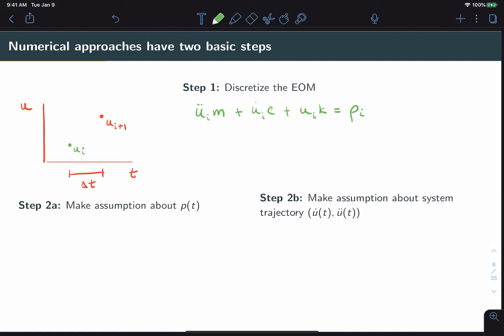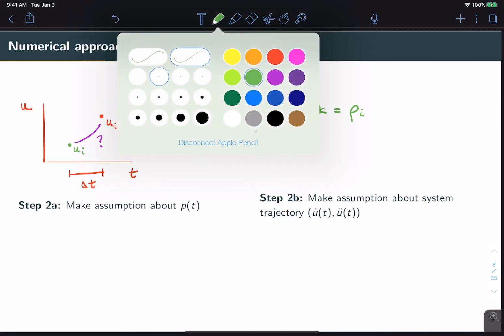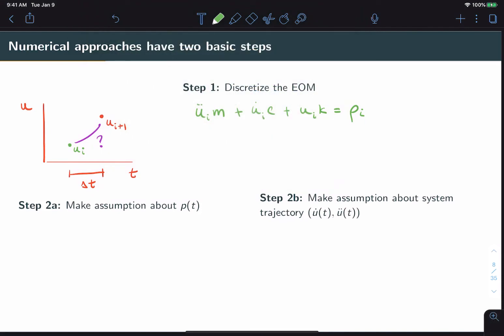The trick is figuring out how to move from the time instance i to the subsequent time instance i plus one. This is where step two comes in, where we can do one of two things, but in essence we have to make some assumption about what is going on in this interval between i and i plus one. I'll denote assumptions in this case by the color purple.